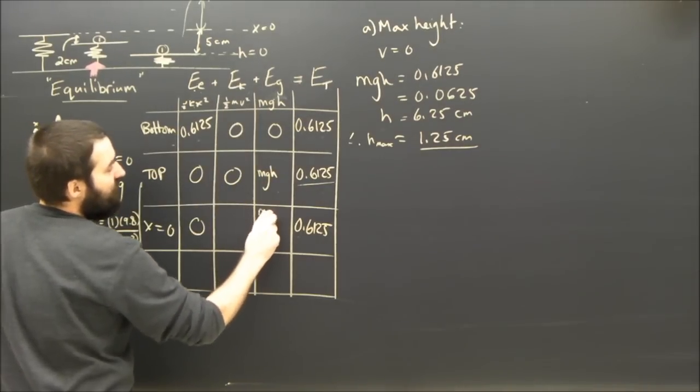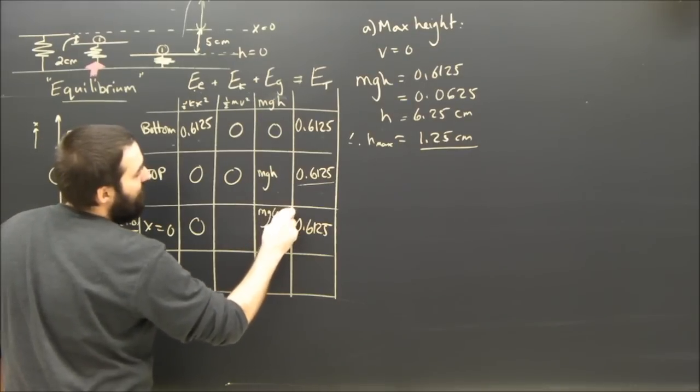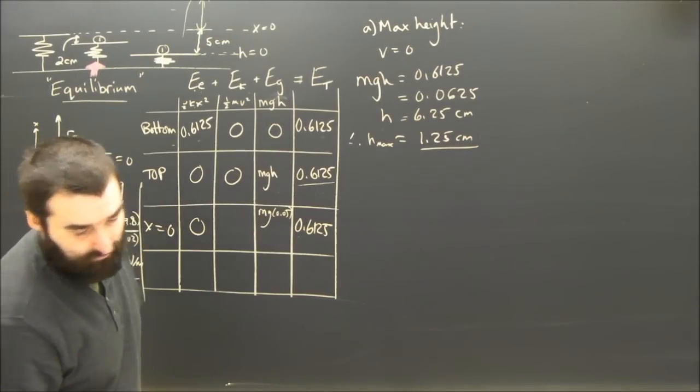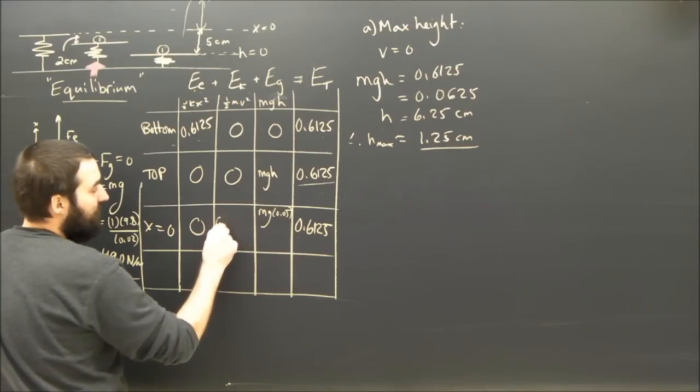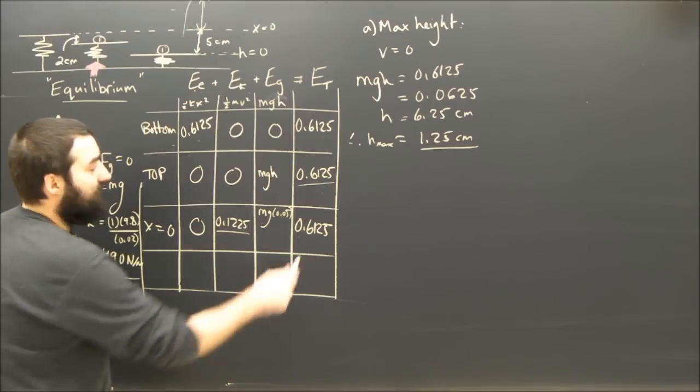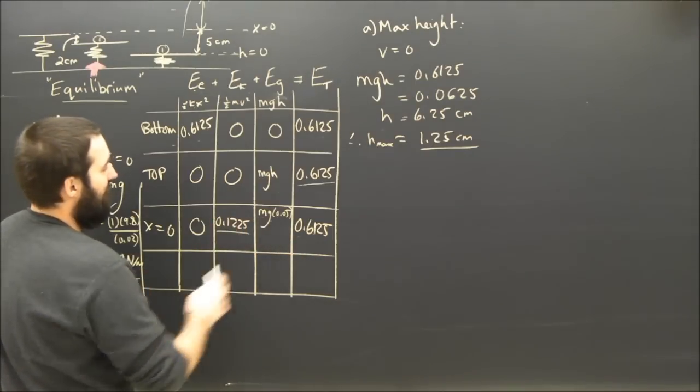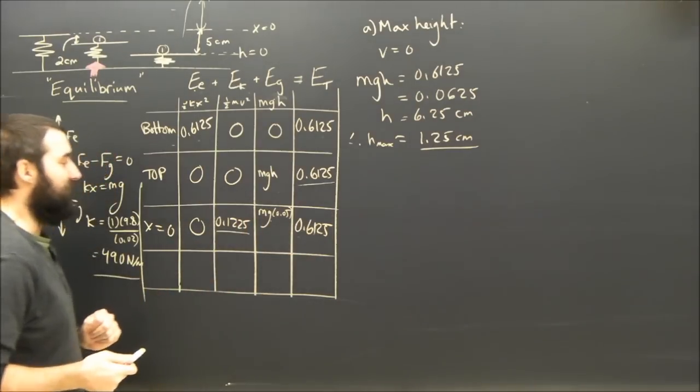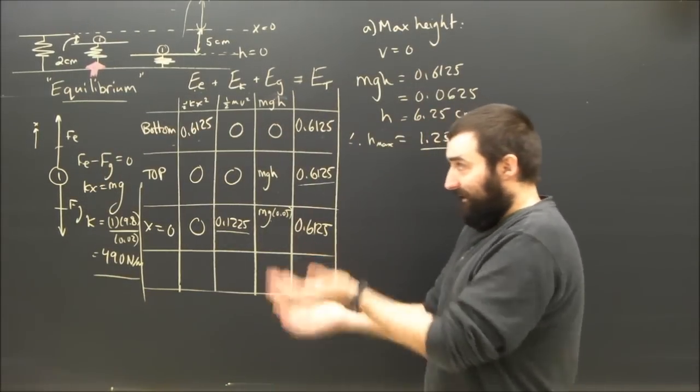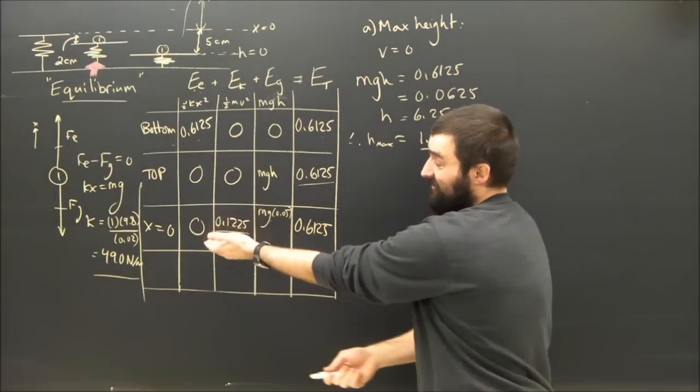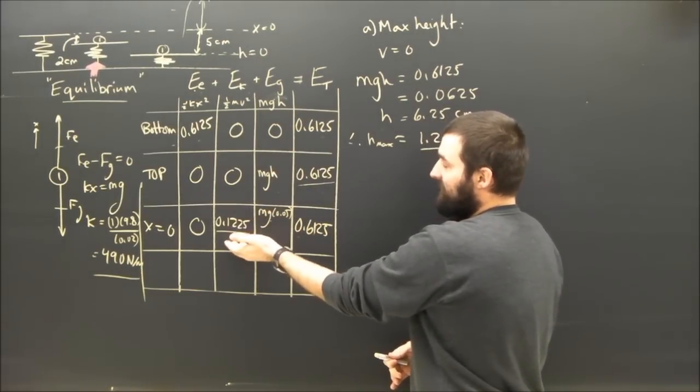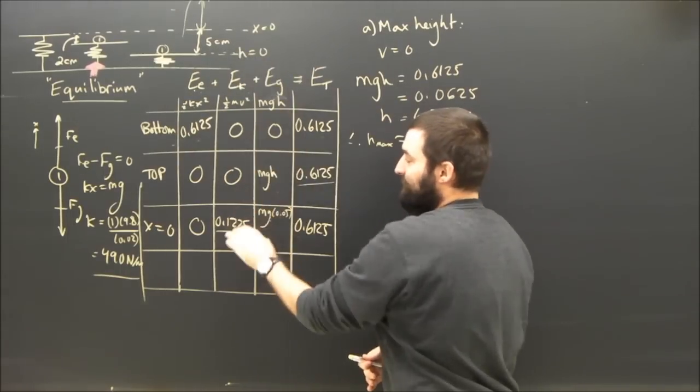The potential energy, elastic energy, is zero, but MGH is not zero. The potential energy is MG times 0.05. So when we do the math, we end up with a kinetic energy which is equal to 0.1225. That's just the kinetic energy. That's 0.6125 minus this equals that. These two have to add up to 0.6.